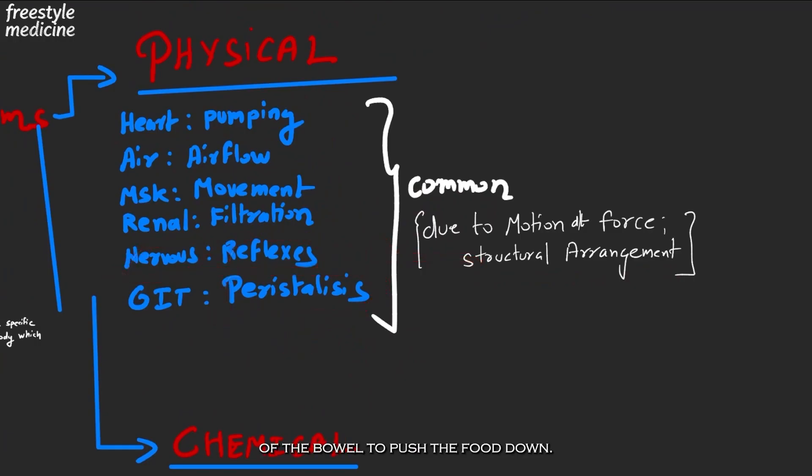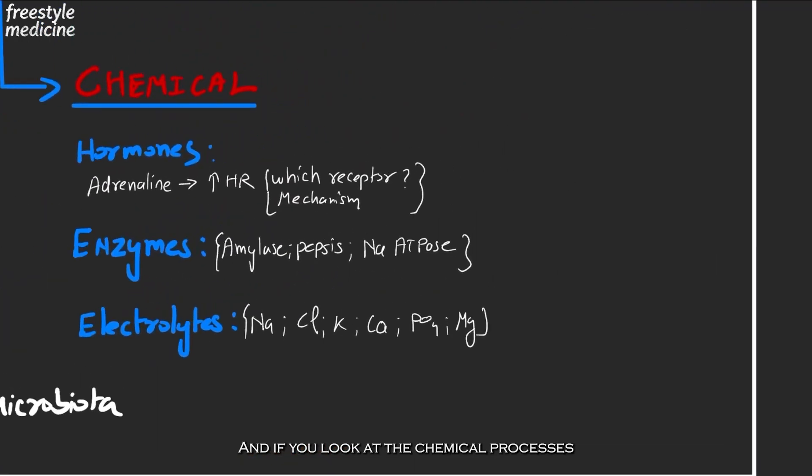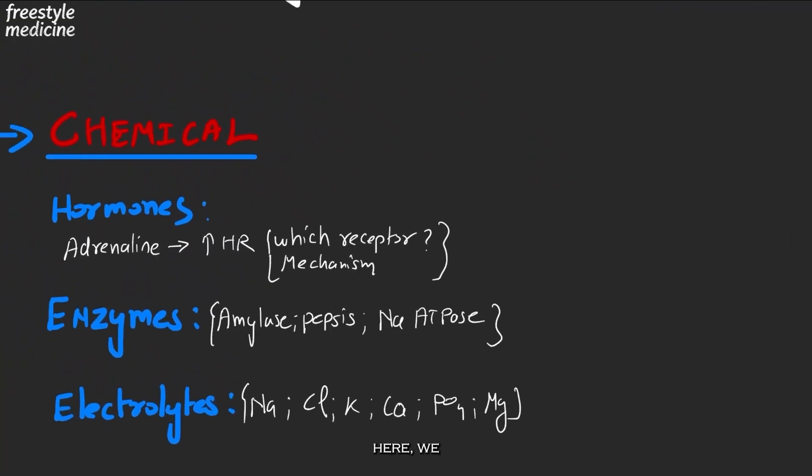In the nervous system, we have the reflexes which are automatically activated, and peristalsis is the process of basically movement of the bowel to push the food down. If you look at the chemical processes, we take into account the actions of the hormones, the important enzymes, and the electrolytes.